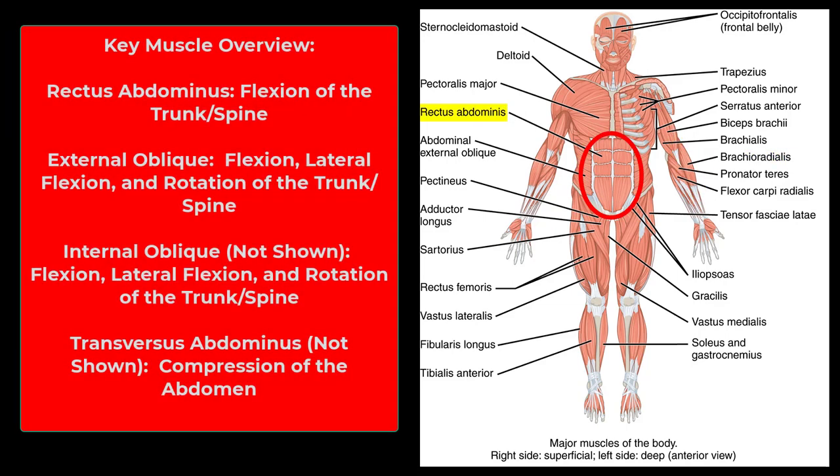Now let's move into the trunk. We have the rectus abdominis — rectus meaning straight, so it travels straight up and down. It flexes the trunk and spine; it's the six-pack muscle. The core muscles run in all different directions: rectus abdominis straight up and down, then internal and external oblique muscles running at oblique angles, involved in rotation of the trunk.